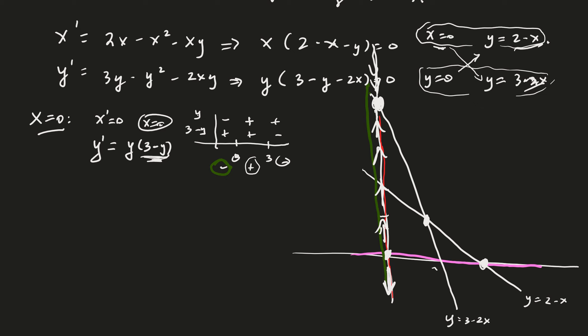For example, how about the other one for x prime equals 0, y equals 2 minus x. Then again, we know x prime is equal to 0. What's y prime? Let's see, we could keep it y. That would be y times 3 minus y minus 2 times x is 2 minus y now. So let's see if that simplifies: 3 minus y, that's 3 minus 4, which would be minus 1, and then minus y plus 2y would be a plus y.